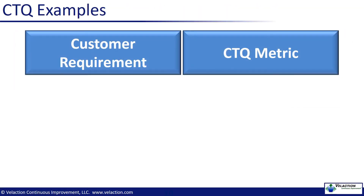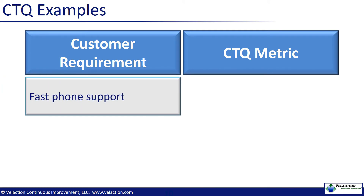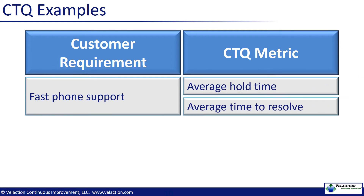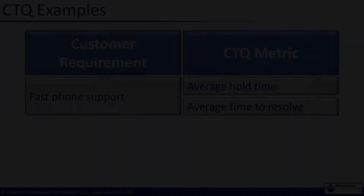Let's take a look at a few examples of critical to quality metrics. If customers require fast phone support, you have a few options in how to measure that. Average hold time gives an indication as to how long it takes to start helping them. Average time to resolve measures how long it is until a customer is completely satisfied. Depending upon your customer base, either one may be more important.